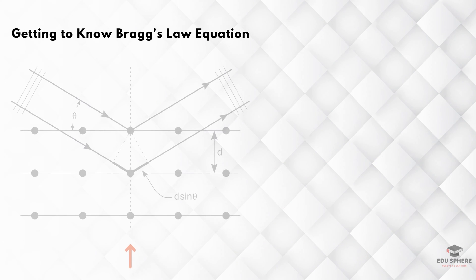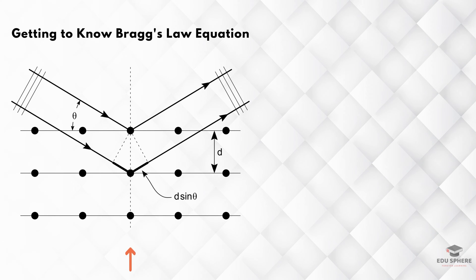Imagine a crystal as a giant, orderly stack of atoms arranged in neat rows and layers. The distance between these layers is crucial and is called d. Now, picture X-rays with a specific wavelength, lambda, shining on this crystal like light on a mirror. The X-rays bounce off the crystal at the same angle they hit it. But here's the cool part.